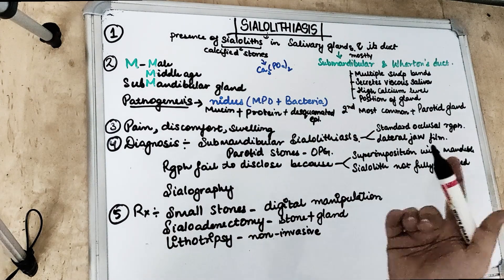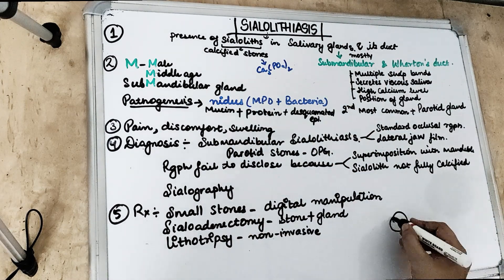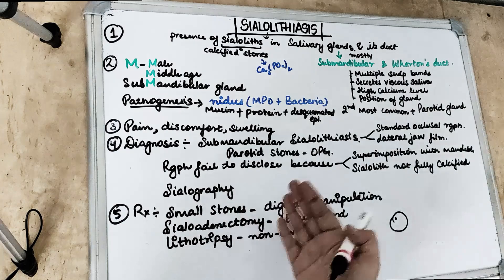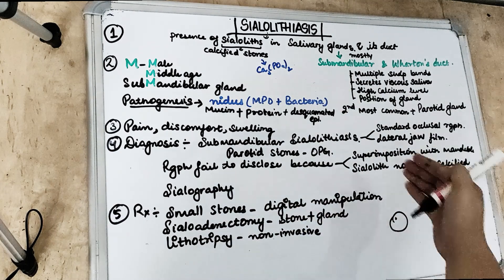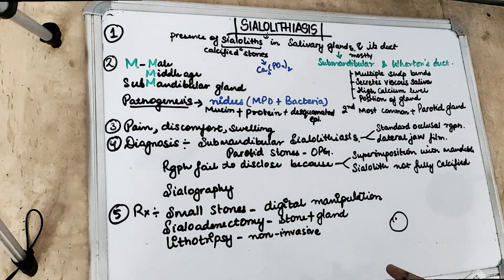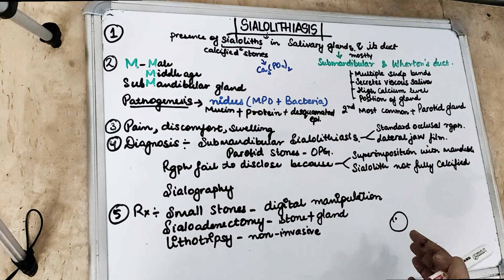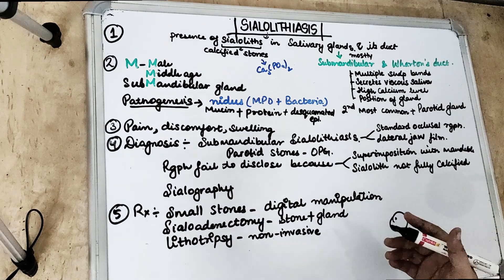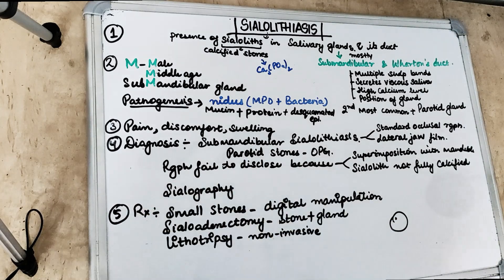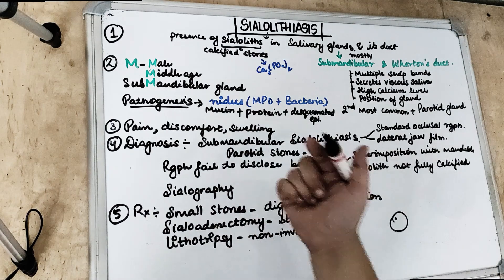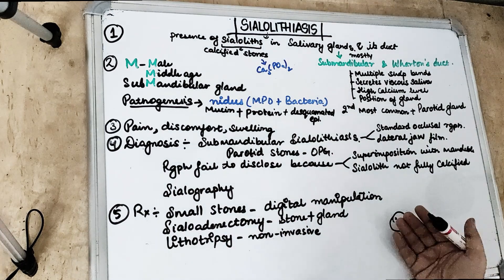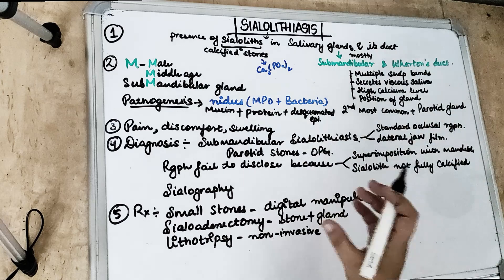So how does this happen? There is a formation of a nidus. The nidus is formed from mucin, protein, desquamated epithelial cells, as well as bacteria. Then there is lamellar crystallization in concentric rings, and due to this there is precipitation of calcium salts. The sialolith that forms starts to increase in size, with layer after layer adding up, growing like a tree in concentric rings, resulting in a calcified stone.